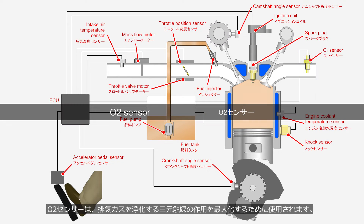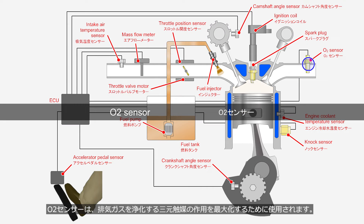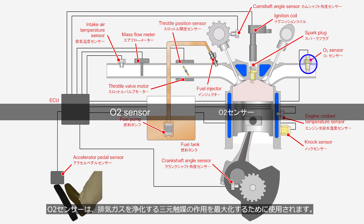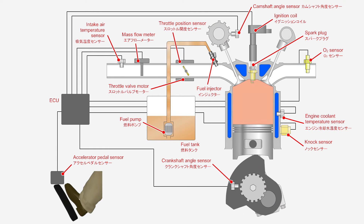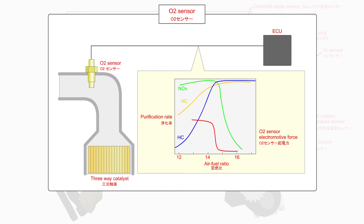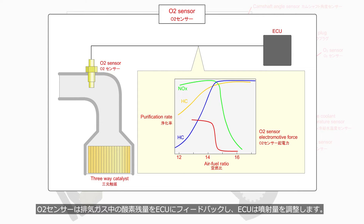The O2 sensor is used to maximize the effectiveness of the three-way catalytic converter in purifying exhaust gases. A three-way catalytic converter operates most efficiently when the air-to-fuel mass ratio is 14.7 to 1. The O2 sensor provides feedback to the ECU regarding the remaining oxygen content in the exhaust gas, and the ECU adjusts the fuel injection quantity accordingly.